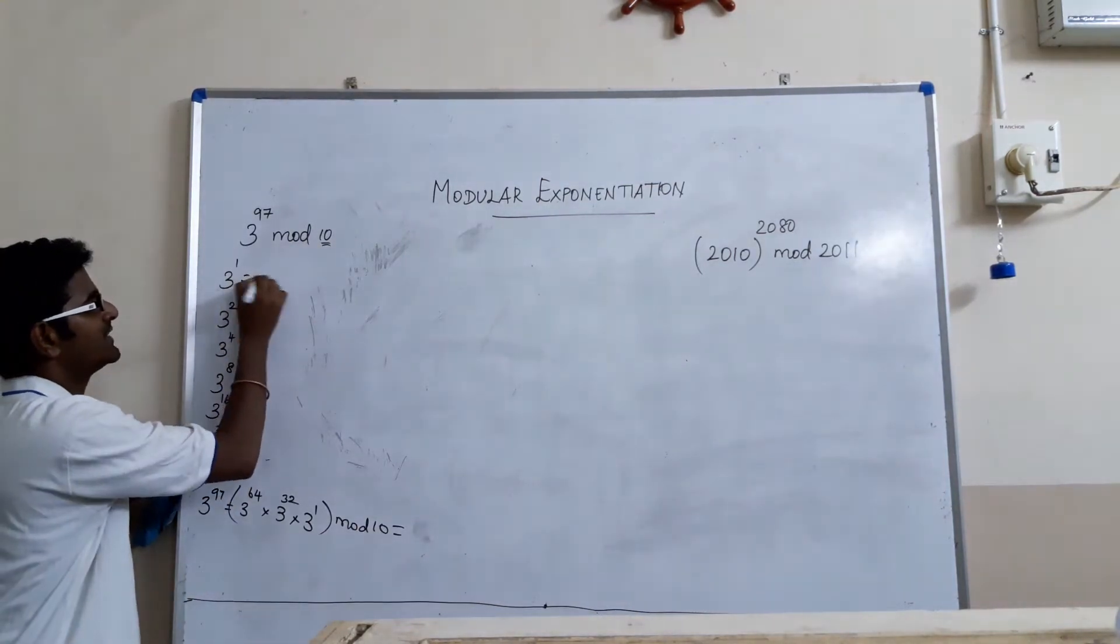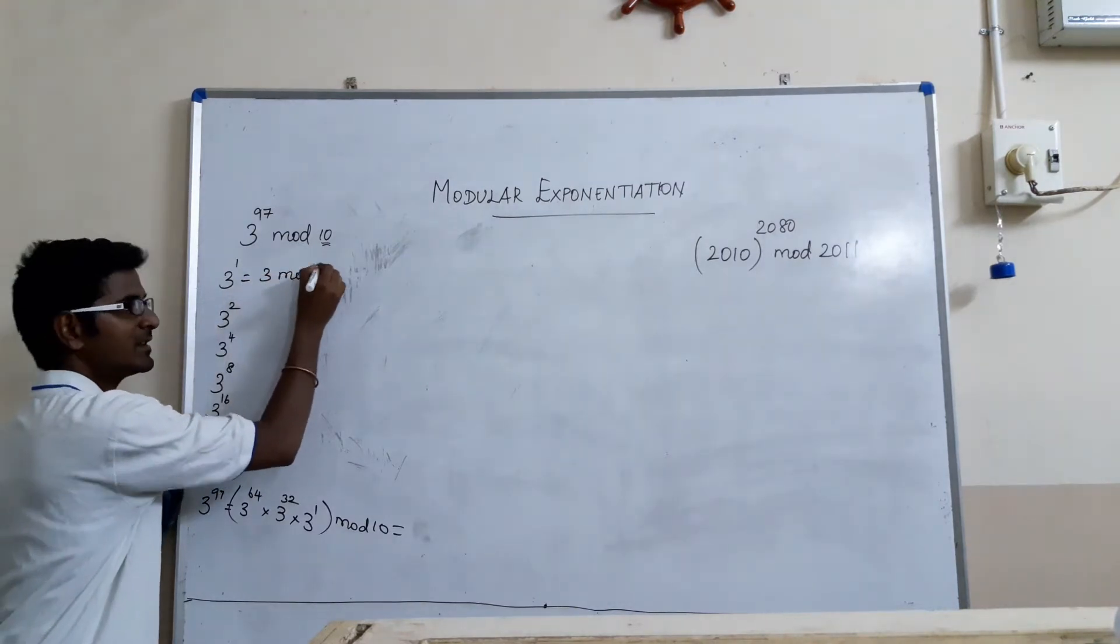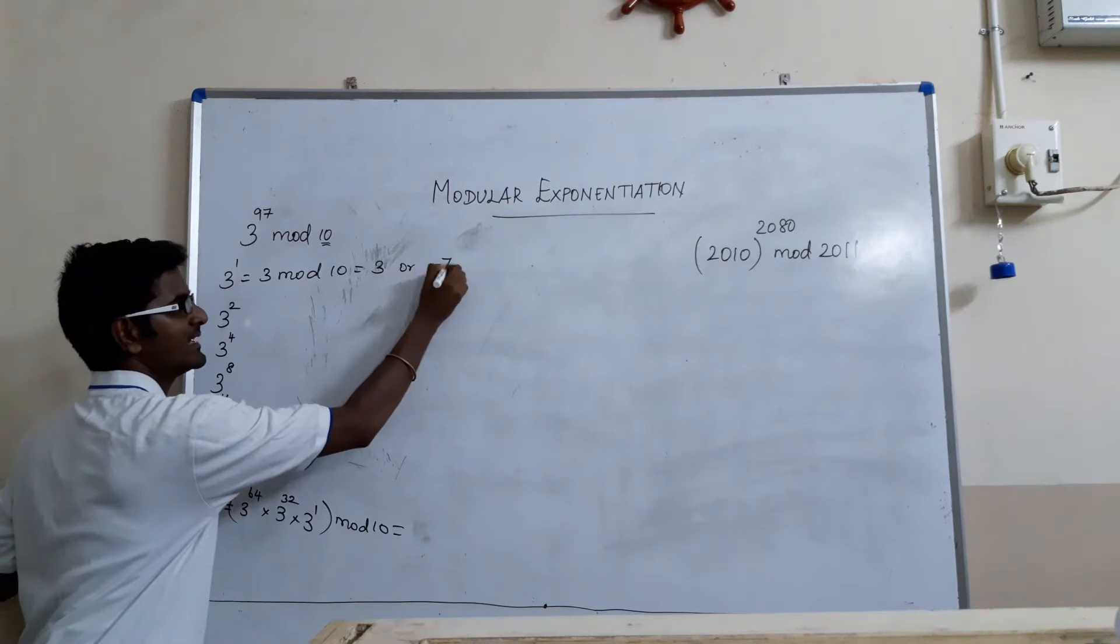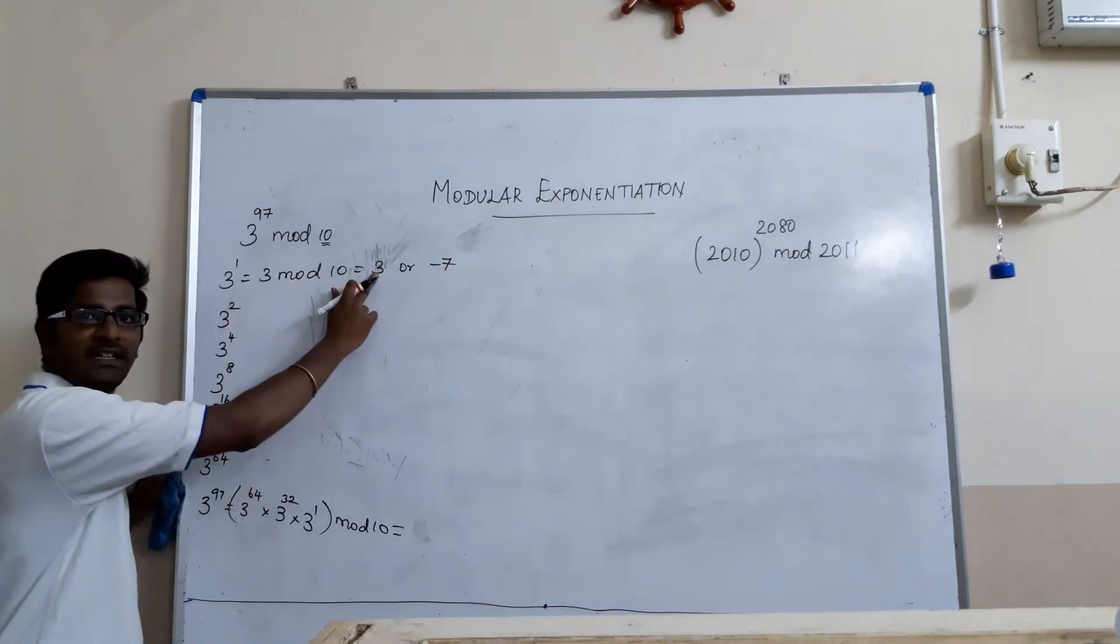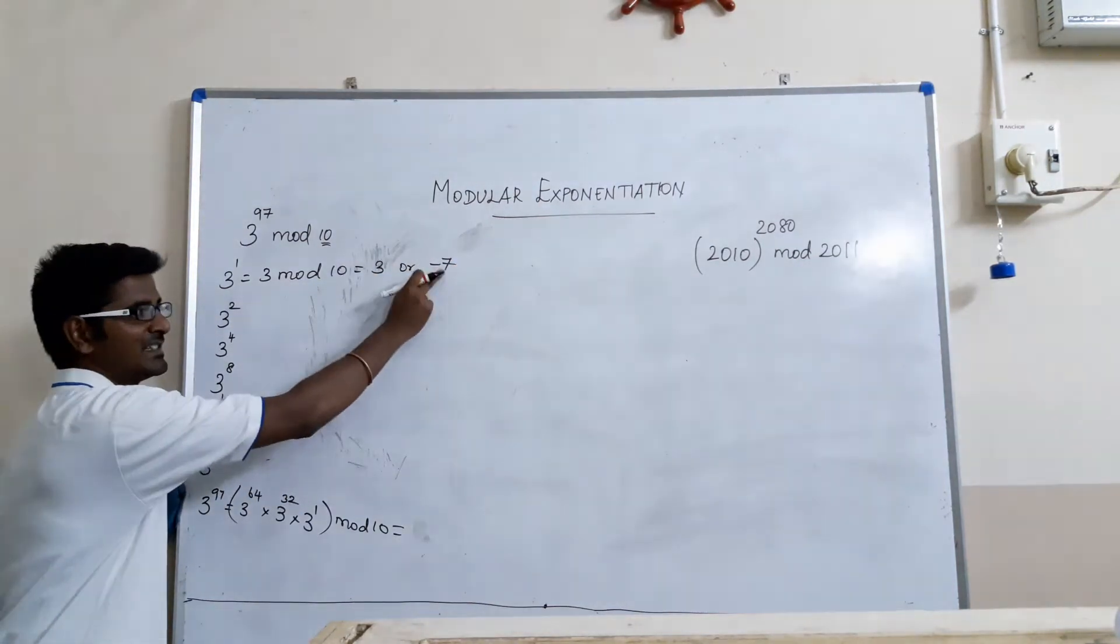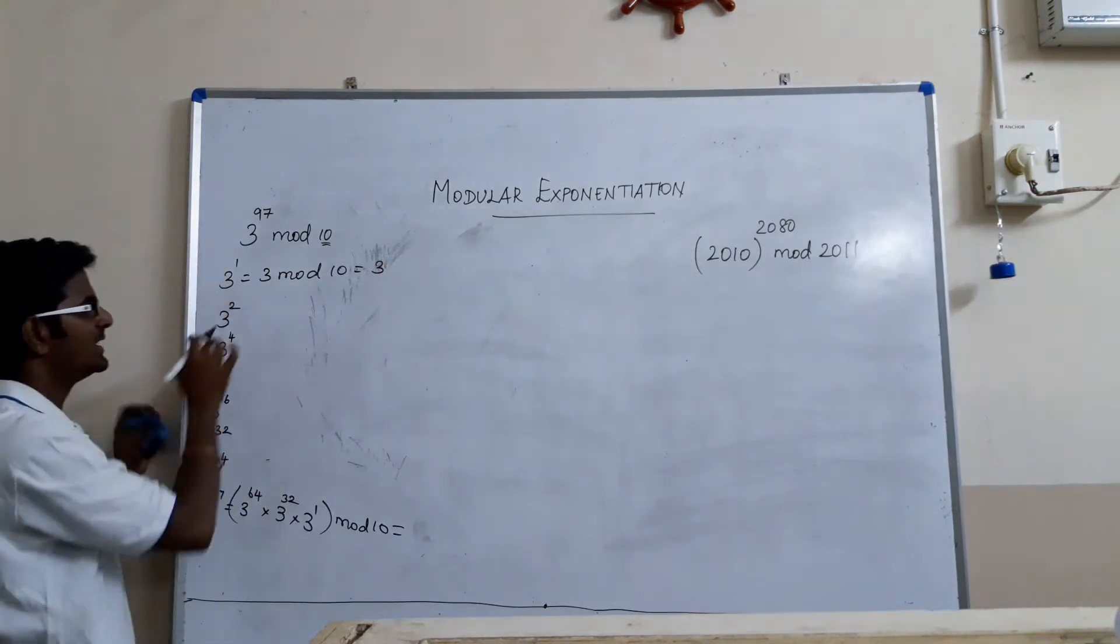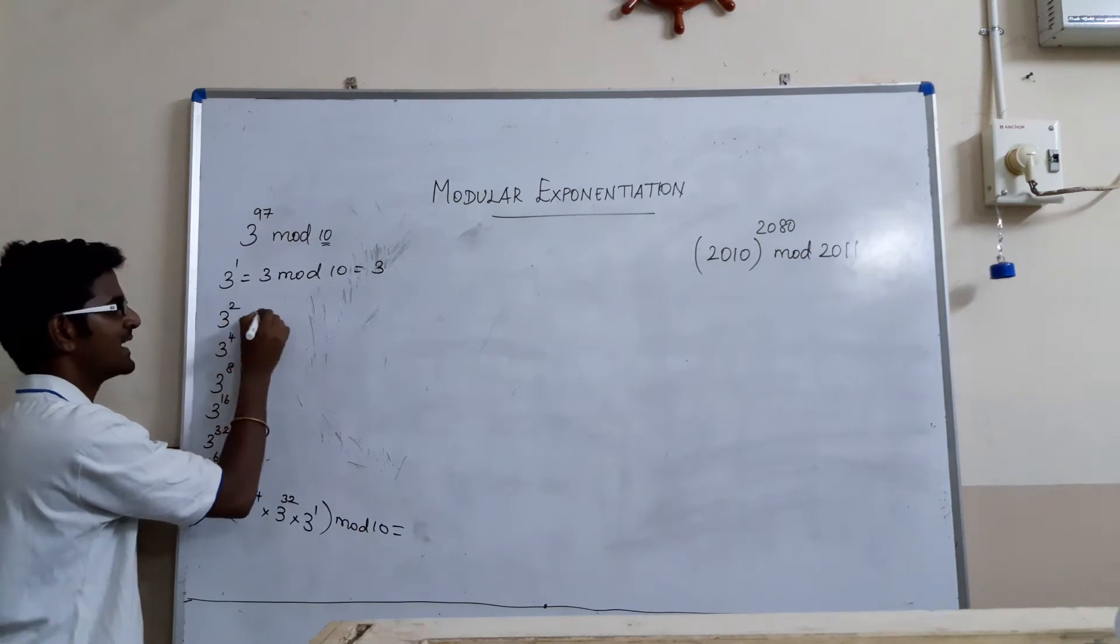We will check. 3 power 1 mod 10 which is equal to 3 mod 10 which can be 3 or minus 7. So, 3 mod 10 can be 3 or minus 7. Since minus 7 is a bigger number than 3 so I am skipping this. I am not taking this. Now, 3 power 2 is 9.